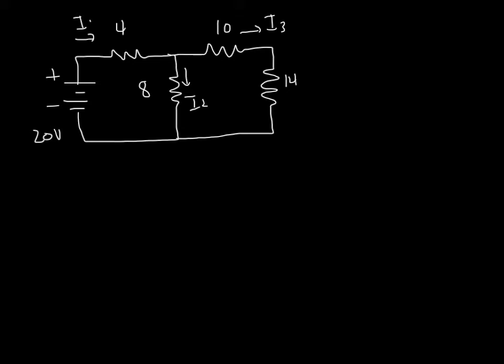Well, the only simple combination of resistors that exist in this circuit is the 10 ohm and the 14 ohm. Those are in series. So I can combine those two into a single resistance of 24 ohms because they're in series, I can simply add the resistances. So let's do that.